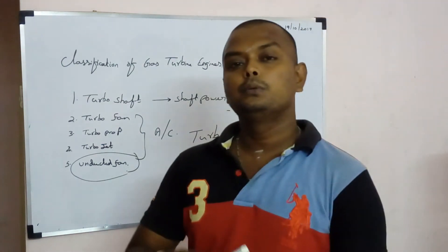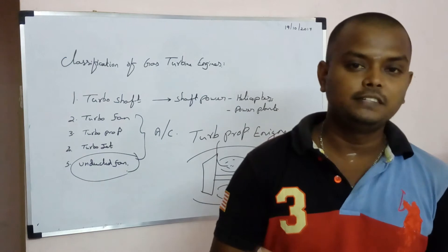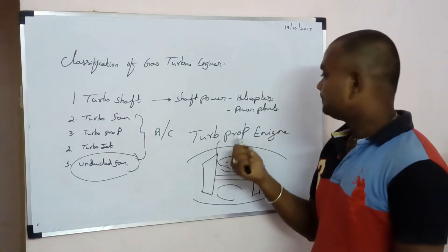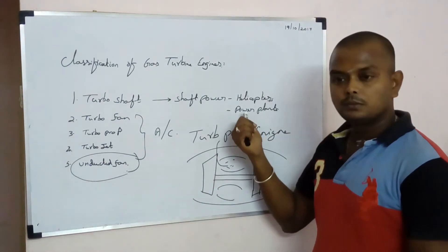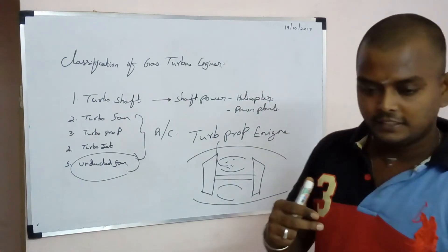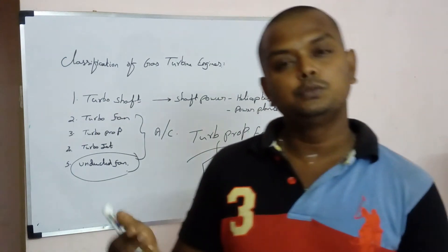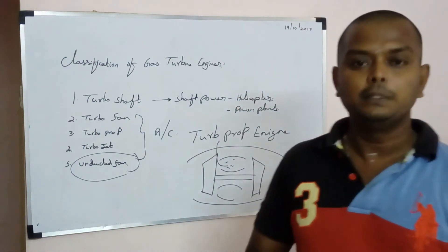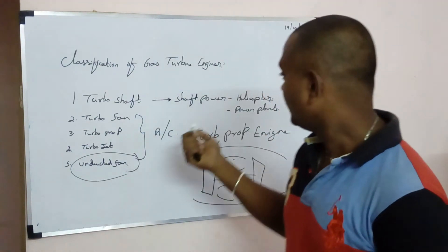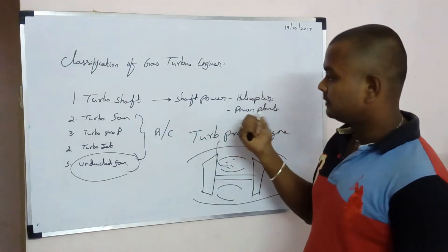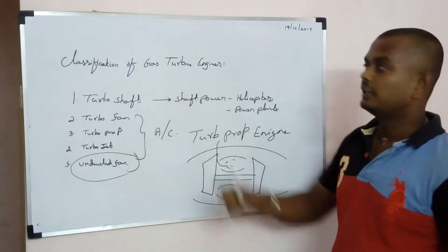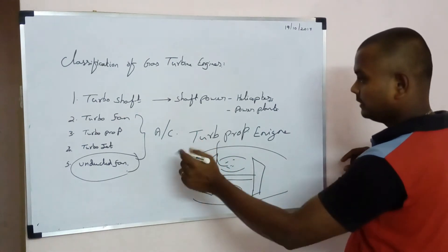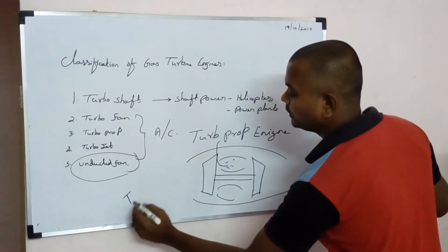The turbo shaft can also be used in power plants. In order to generate electricity, we need to rotate generators. To rotate these generators we need power, and that power comes from the shaft power of the turbo shaft engine.